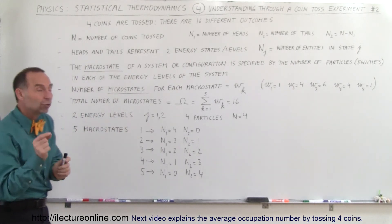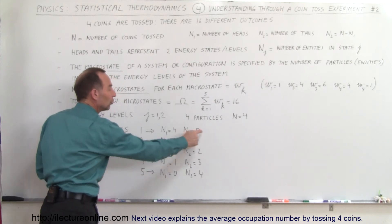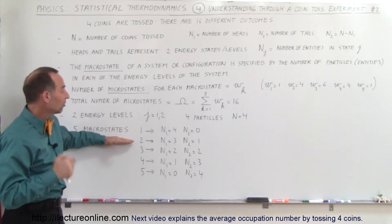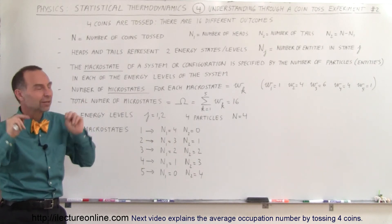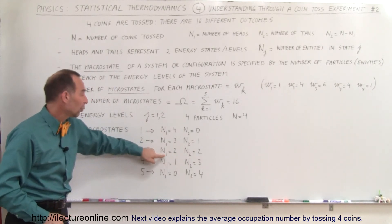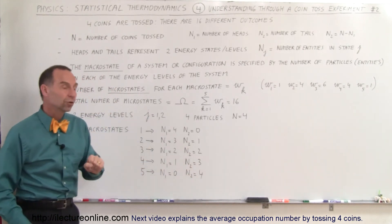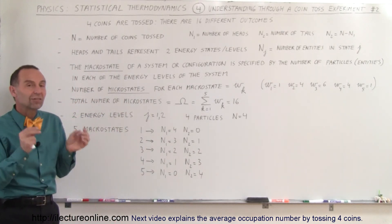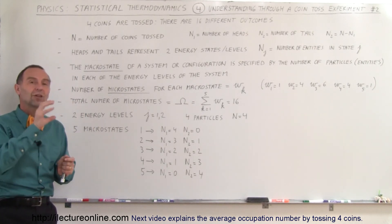Each macro state is defined by the total number of entities in each energy level. Macro state one: four entities in energy level one and zero in energy level two. Macro state two: three in energy level one, one in energy level two. Macro state three: two in energy level one, two in energy level two. Macro state four: one entity in energy level one, three in energy level two. Macro state five: zero in energy level one and four in energy level two. That's how we define macro states — by the number of entities, atoms, electrons, photons, or whatever it may be, in each particular state.